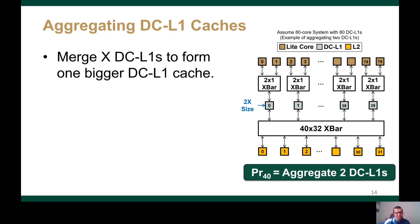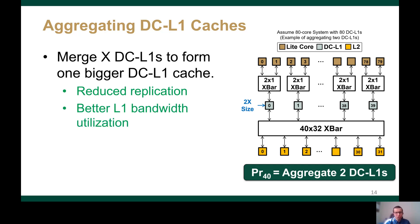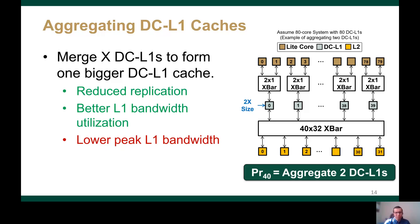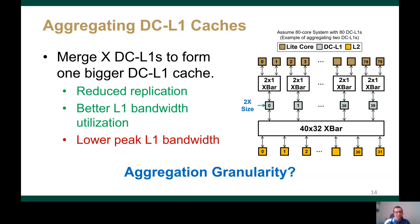Under aggregation, the DCL1s now have higher utilization as a single caching resource. However, due to the lower number of DCL1s under aggregation, the peak L1 bandwidth is reduced. So the question is: to what extent can we aggregate? If all DCL1s are aggregated, then the replication is eliminated. However, the L1 peak bandwidth is significantly affected, so we will study the aggregation granularity.